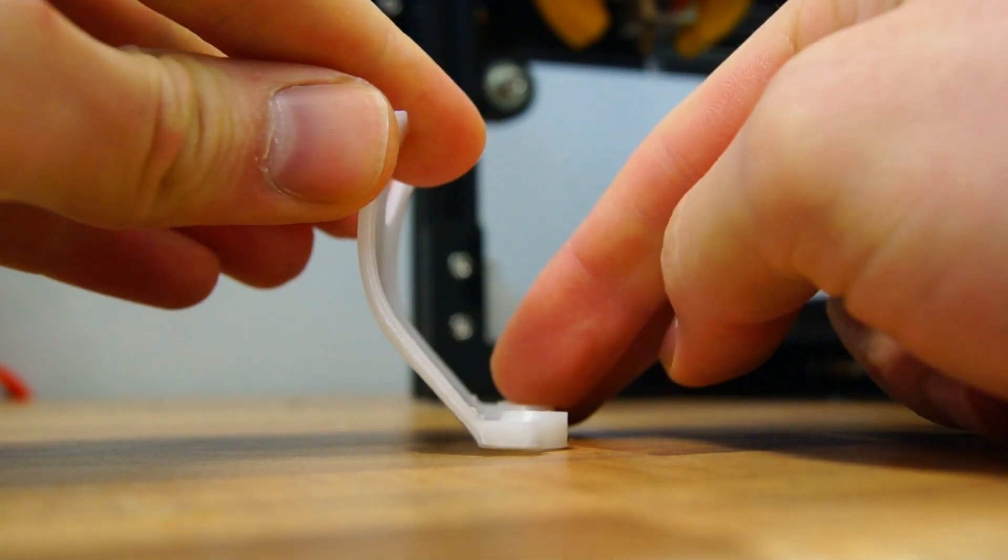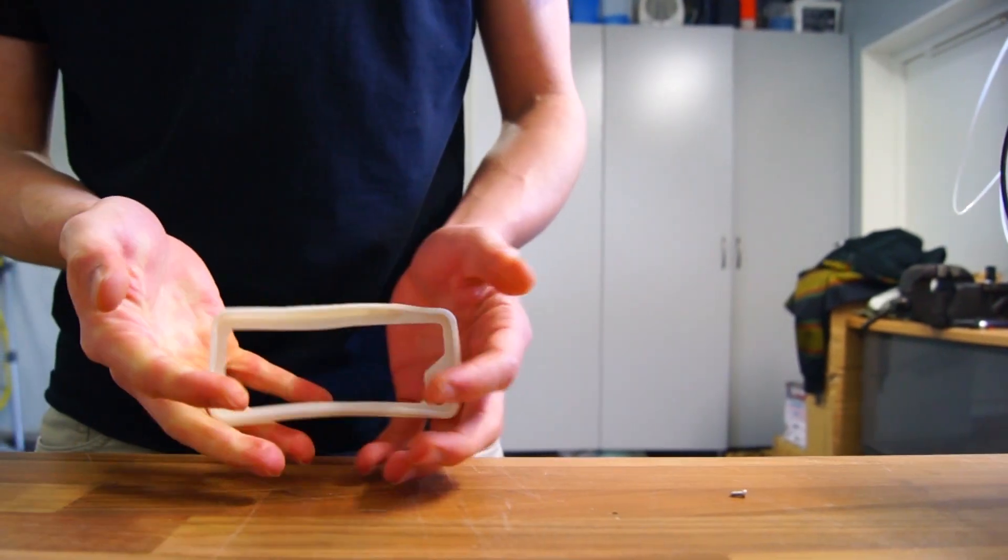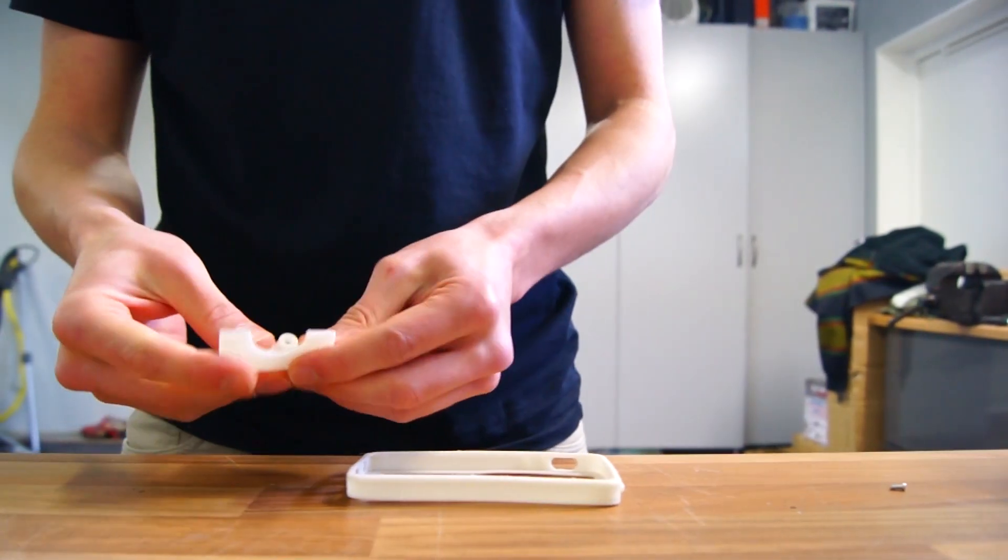It came out slightly warped, but good enough for it to be tested. It's significantly less flexible than the E-Sun Elastic, but still way more flexible than the PLA.